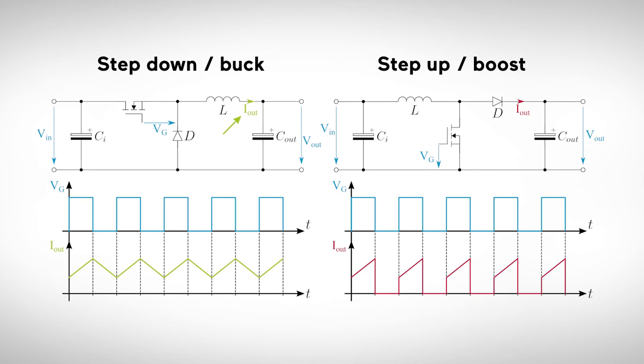The current from the inductor into the output capacitor, on the other hand, is continuous for the step-down converter and discontinuous for the step-up converter. That's a plus for the buck converter, since continuous current means less stress for the capacitor.